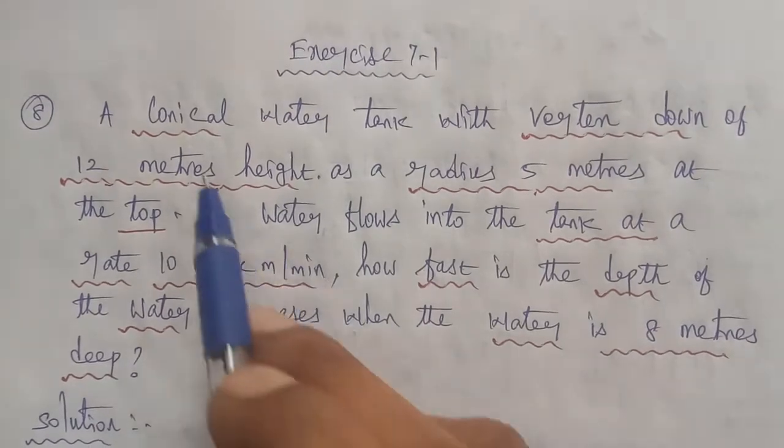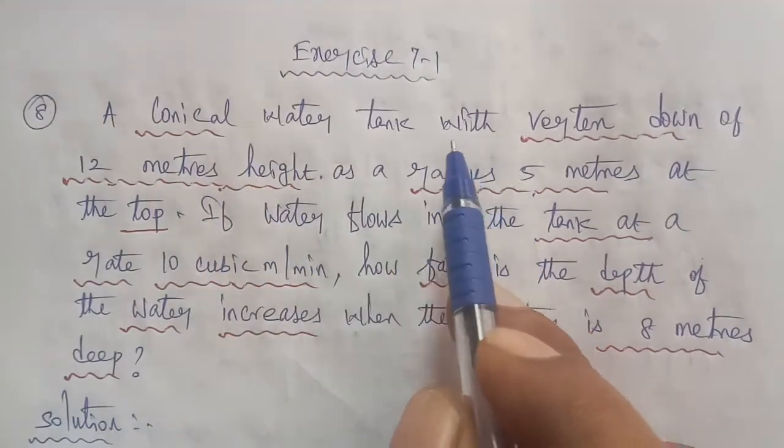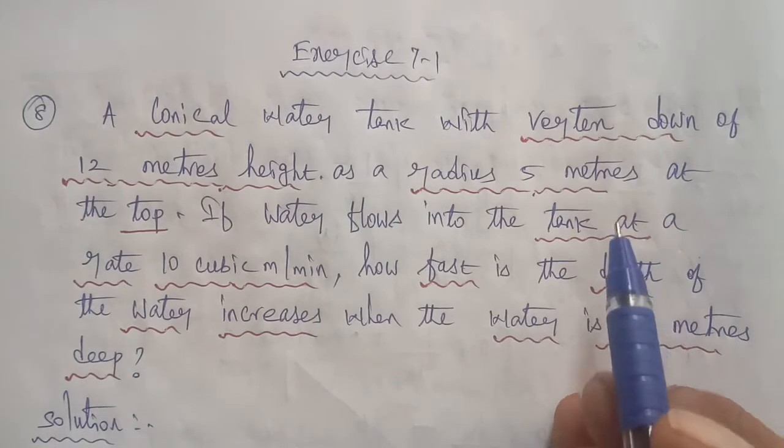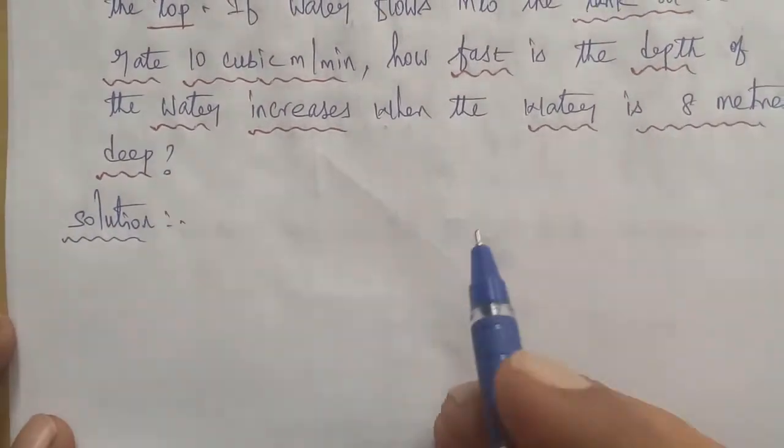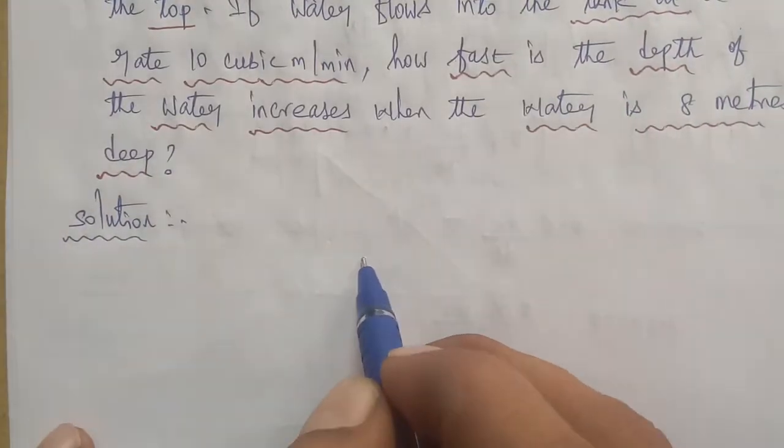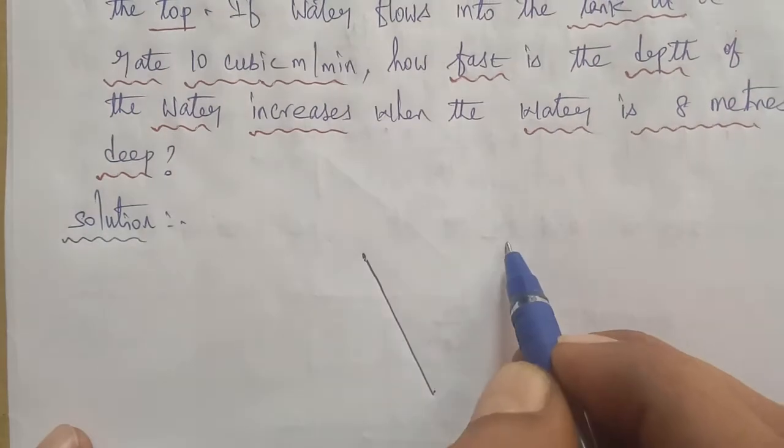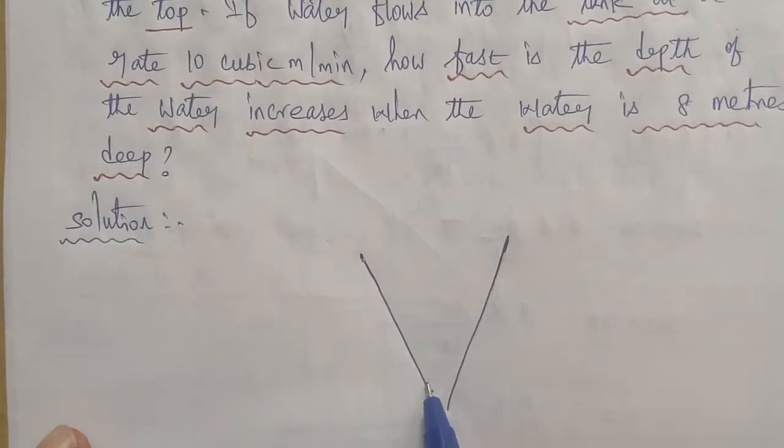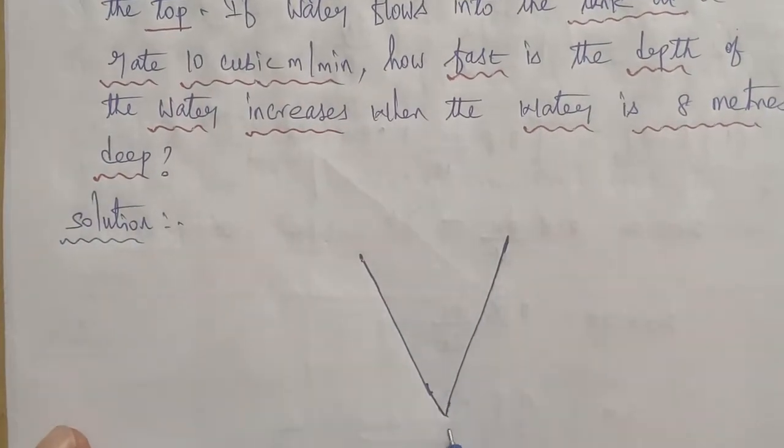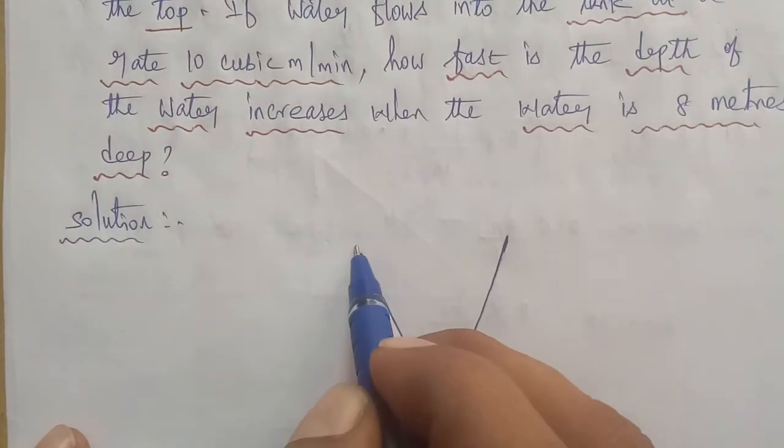So in the given question, a conical water tank with vertex down. So one conical water tank we will draw. So it is an inverted cone, with the vertex at the bottom. So the origin point, the vertex is there.